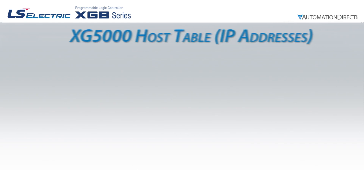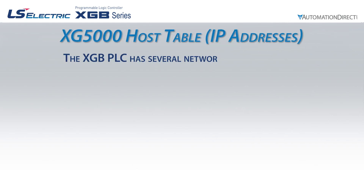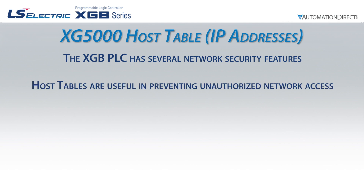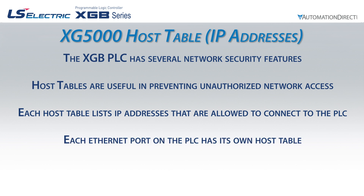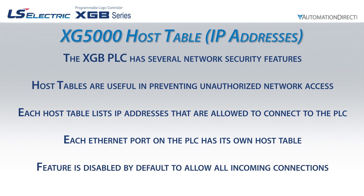In the modern age of remote access, network security is a very important aspect of industrial controls. The XGB PLC allows the user to set up host tables that prevent unauthorized remote communication access to the information in the PLC. These host tables are lists of IP addresses that are allowed to access the Ethernet ports. Each Ethernet port has its own host table. By default, these host tables are disabled to allow any incoming IP address. Let's enable the host table for the internal Ethernet interface on our CPU.